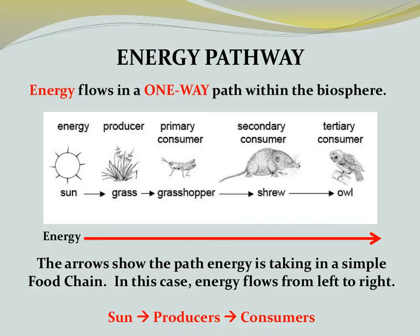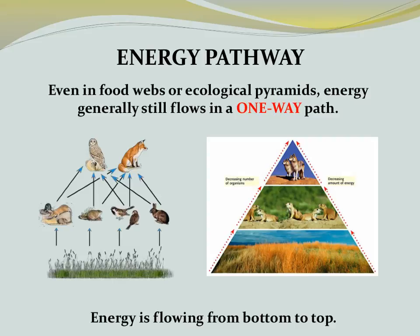How does energy flow in the biosphere? The pathway is a one-way path. This simple food chain illustrates that one-way path, as does the energy pyramid. Typically energy flows from the sun, to producers, to consumers. Even in food webs or ecological pyramids, energy still flows in a one-way path — flowing upward through the food web and upward within the ecological energy pyramid.